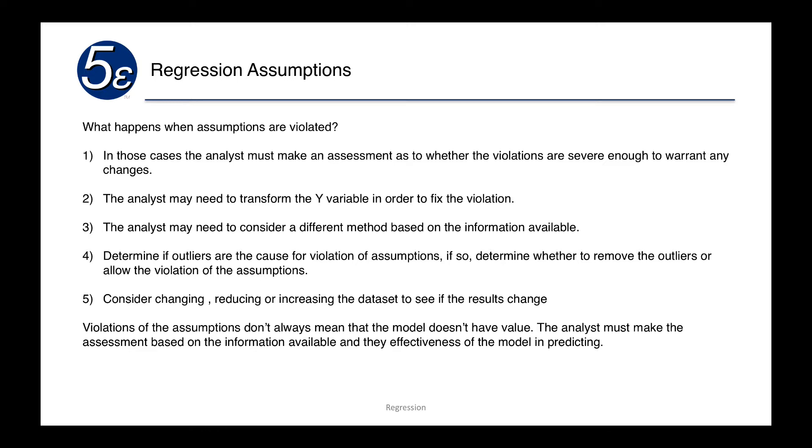We need to determine if single outliers or multiple outliers are the cause for the violation assumptions. It is possible that one or two key outliers are causing us to violate the assumptions entirely. If so, then we need to determine what we're going to do with those outliers. Do we allow the violation of the assumptions? Do we remove the outliers? Or do we do something else?